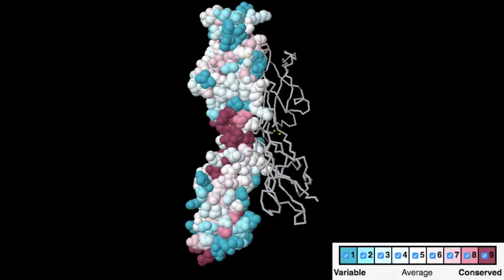Using ConSurf Server, I extracted the amino acid sequence of the EC1 and EC2 E-cadherin domains from the PDB file and found the sequence homologs. The program then performed the sequence alignment and calculation of conservation scores.